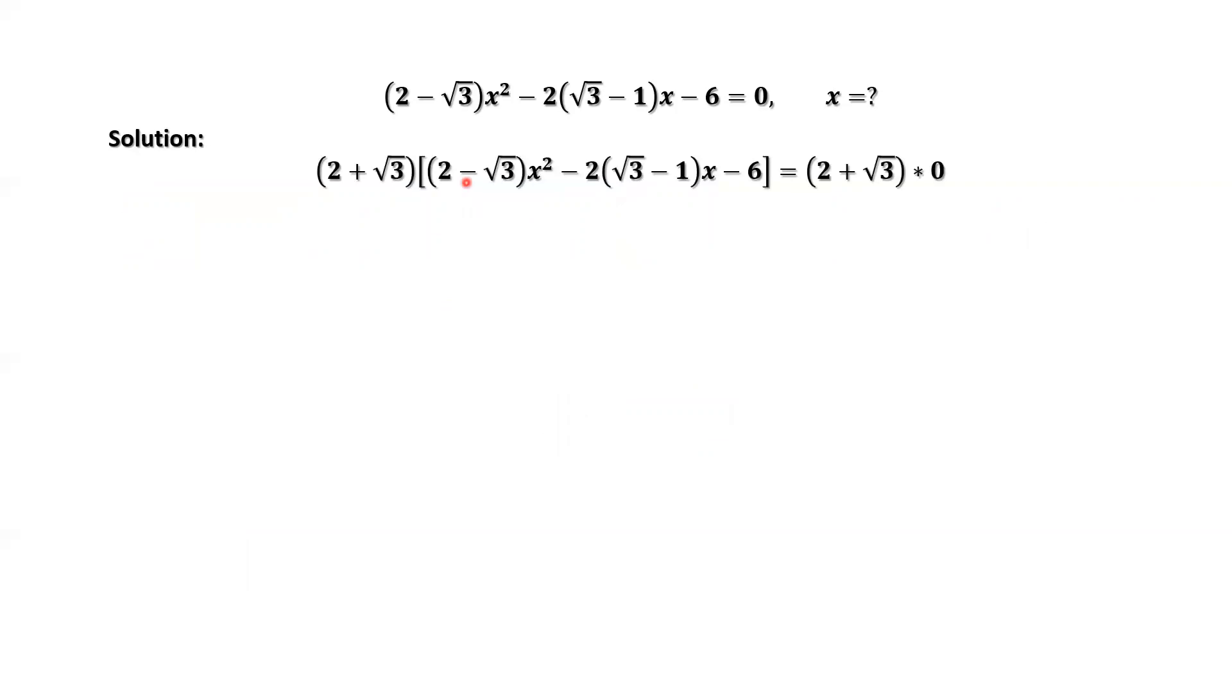First, from the given condition, we want to get rid of the constants in front of x². Multiply its conjugate 2 + √3 on both sides of this given equation.